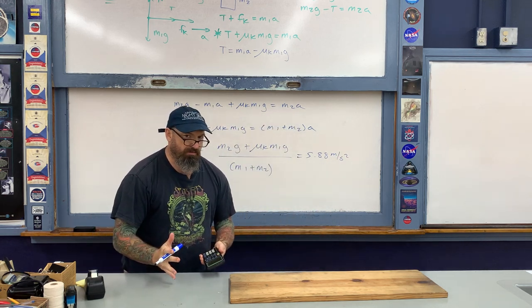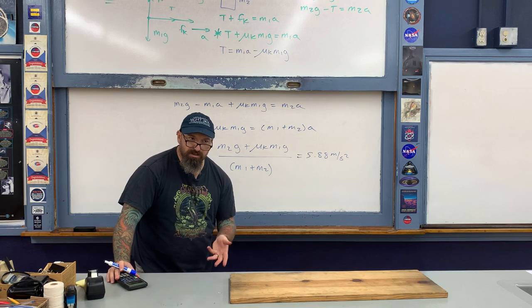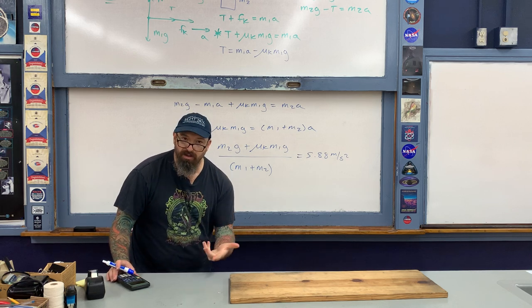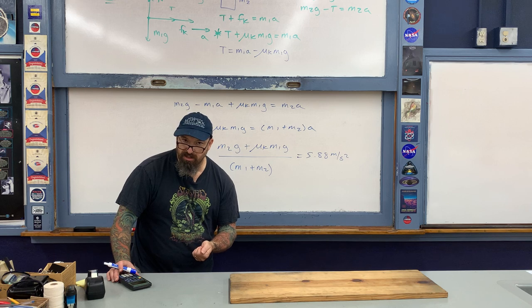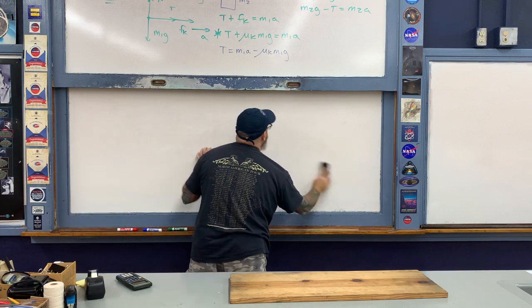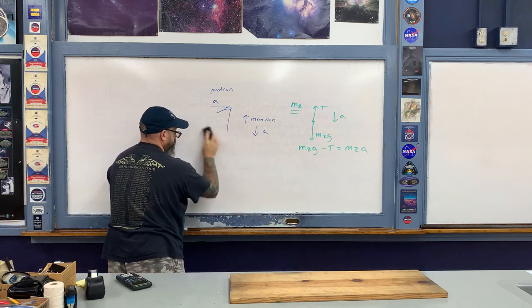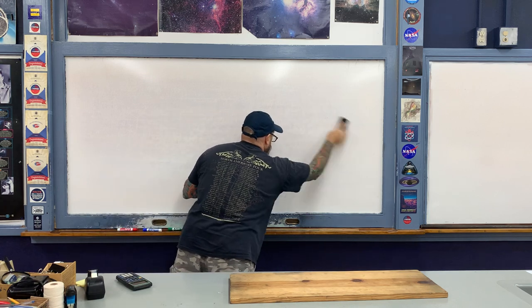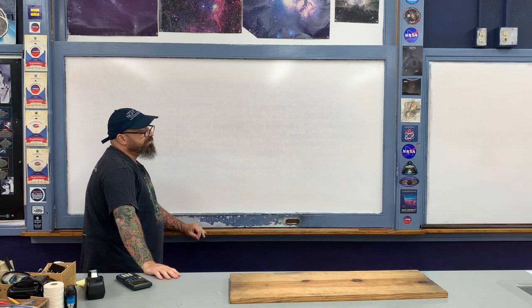Plugging in the numbers gives 5.88 meters per second squared. So the objects slow down faster in part B than they sped up in part A. Introducing kinetic friction into dynamical situations complicates matters. For the last kinetic friction example, we're going to look at the incline situation, now taking friction into account. The angle of inclination is 30 degrees and the coefficient of kinetic friction equals 0.2.